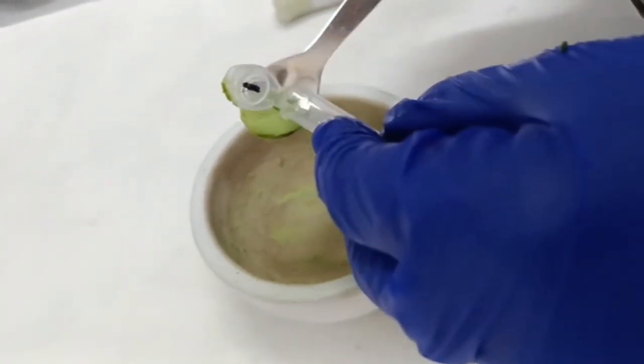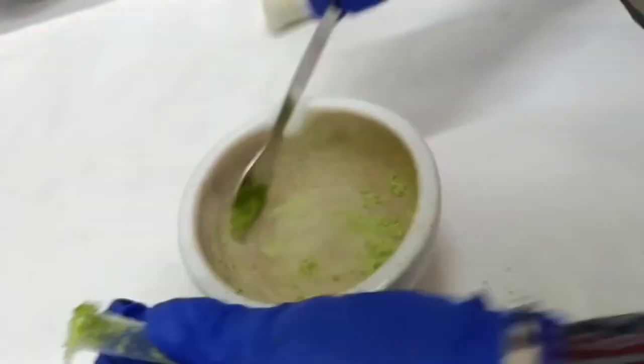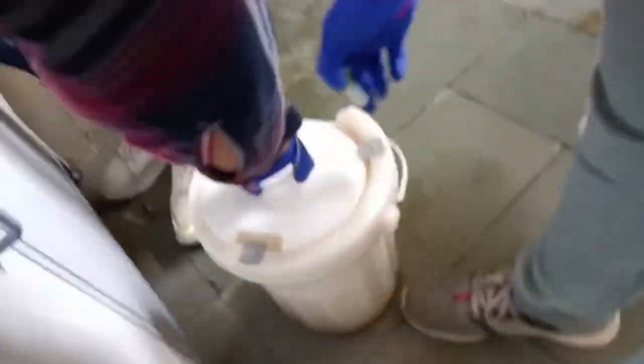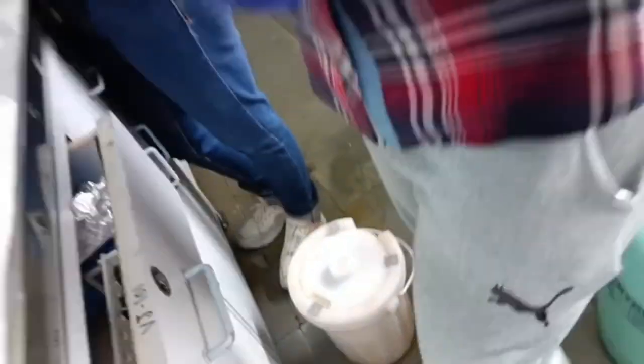After crushing, when we get fine powder, we transfer it into centrifuge tube and add this tube to liquid nitrogen.